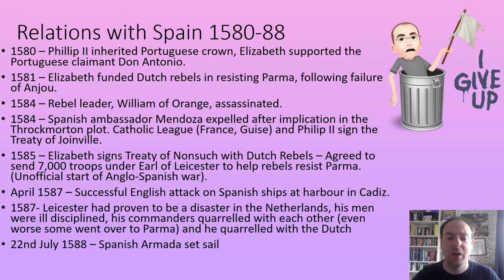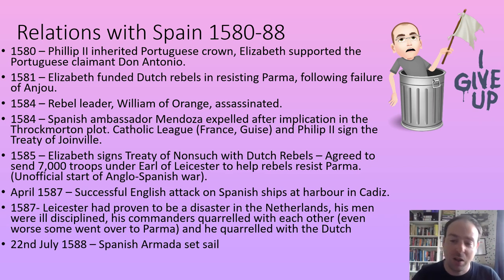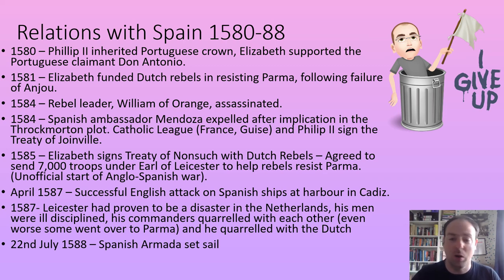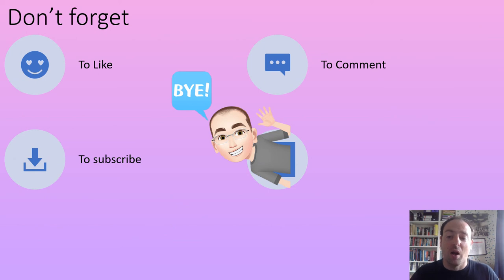In 1587 the English successfully attacked Spanish ships at the harbour of Cadiz. The Earl of Essex, Robert Devereux, was involved and would later come to prominence in Elizabeth's court before leading a rebellion. Leicester proved to be an absolute disaster in the Netherlands: his men were ill-disciplined, his commanders quarrelled, some even defected to Parma handing him Dutch towns, and Leicester quarrelled with the Dutch. In 1587 he was recalled.